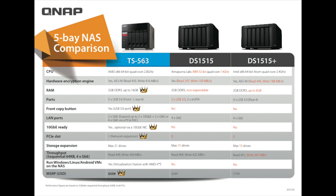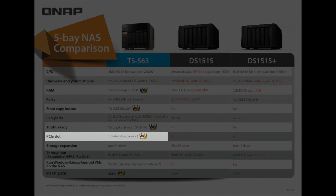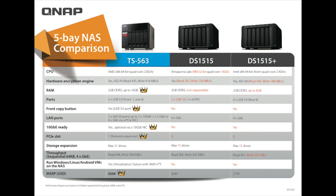Next, let's look at the ability to connect a 10 gig card into these systems. With the QNAP TS-563, you can connect a 10 gigabit card into the system to run a 10 gig network. The DS-1515 doesn't have this, nor does the DS-1515+. Regarding PCIe slots, the QNAP has one slot for network expansion. The DS-1515 and the DS-1515+ do not include this.